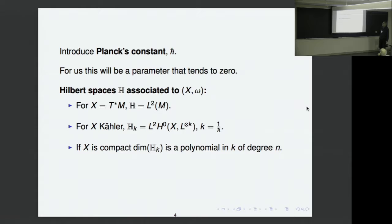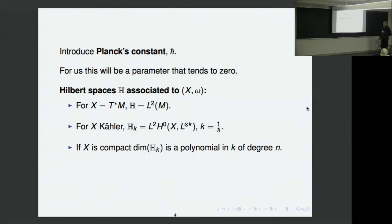Introduce Planck's constant H-bar. Planck's constant is a constant — however, it's not really a constant, it's a parameter. A parameter is a variable constant, by definition. So it will be a number that is allowed to tend to zero. The whole theory is asymptotic as H tends to zero, and it relates the quantum world with the geometry of classical mechanics.